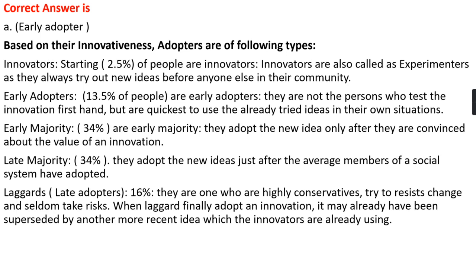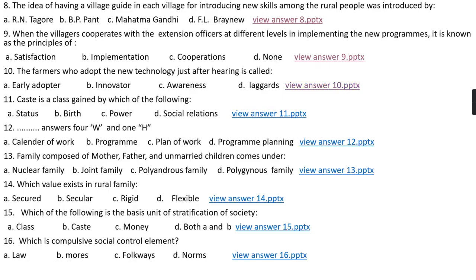Followed by early majority, which includes 34 percent of people — they adopt a new idea only after they are convinced about the value of an innovation. Followed by late majority, which also includes 34 percent of people — they adopt the new idea just after the average member of the social system has adopted. The last one is the laggard, which is the late adopter, including 16 percent of people. They are highly conservative, resist change, and don't take any risks. When the laggard finally adopts an innovation, it may already have been superseded by another more recent idea that the innovators are already using.